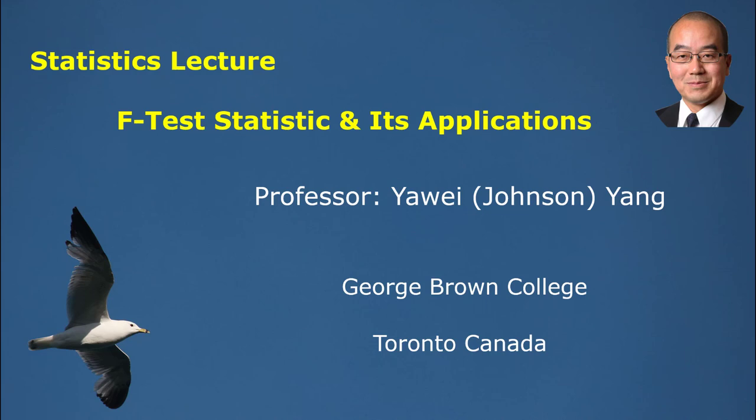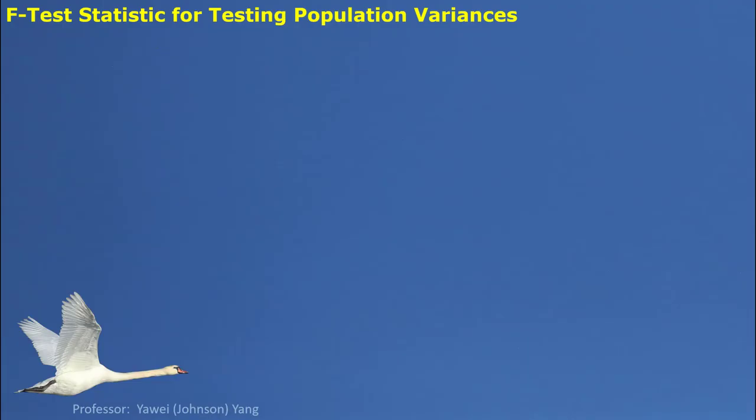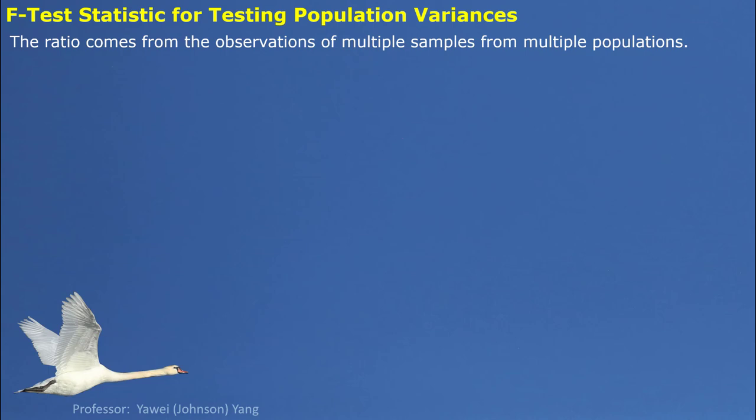Hello everyone. Here we talk about F-test statistic and its applications. F-test statistic is used for testing population variances. The research comes from observations of multiple samples from multiple populations. Simply consider two populations — we pick up a random simple sample for each. We come out with two independent random samples, and each random sample gives us a sample variance, and we use these two sample variances to do the ratio, giving us the F-test statistic.